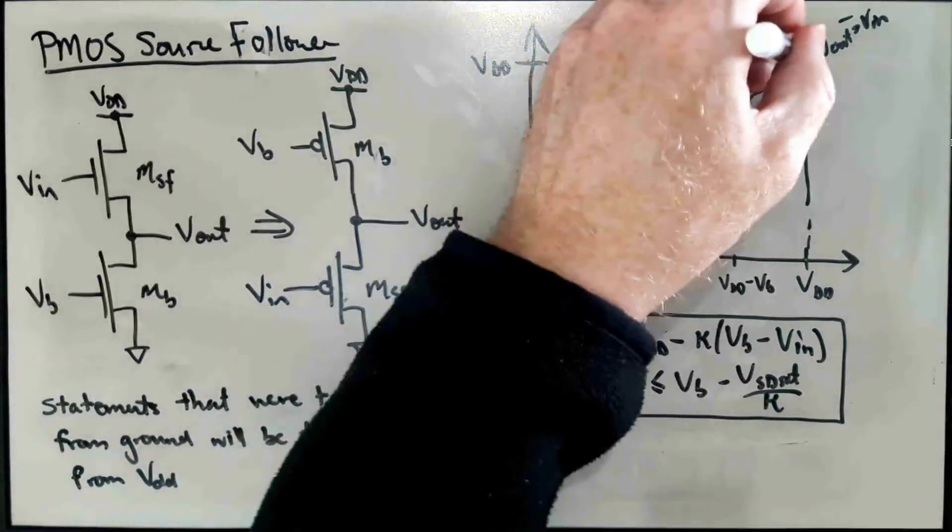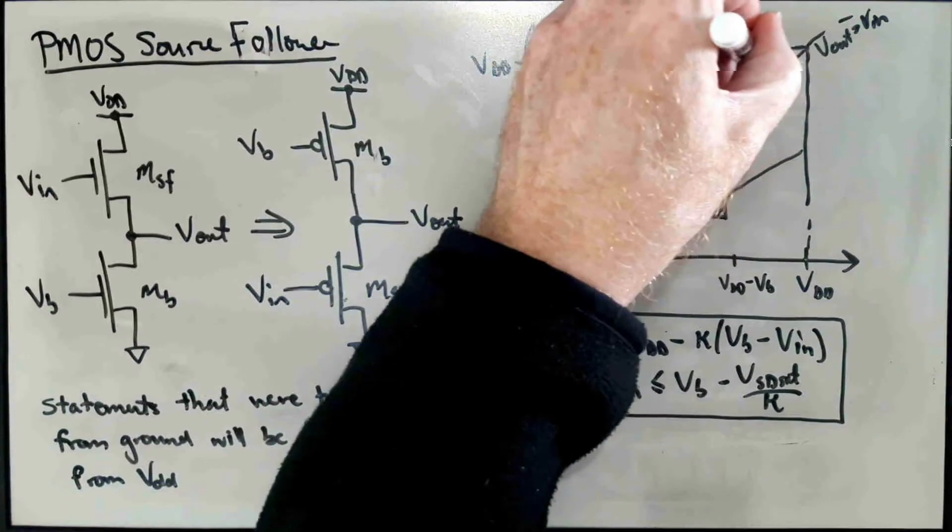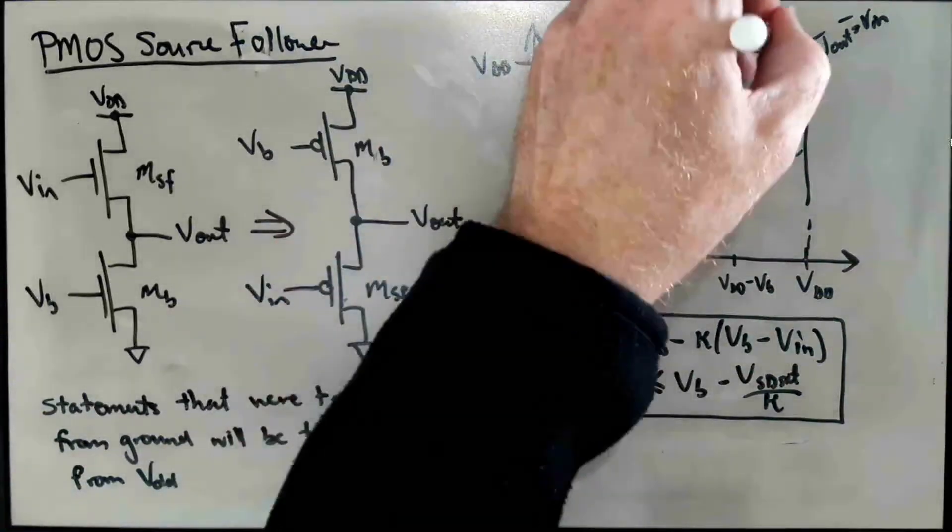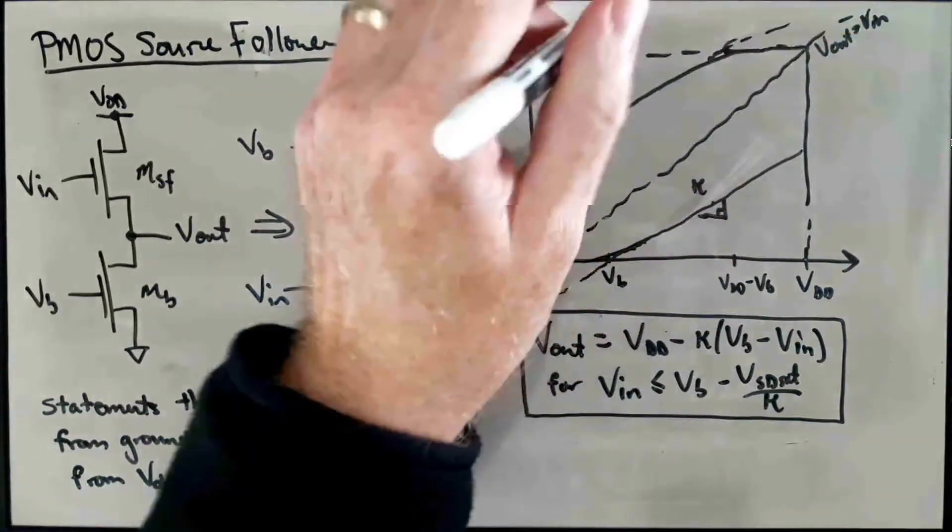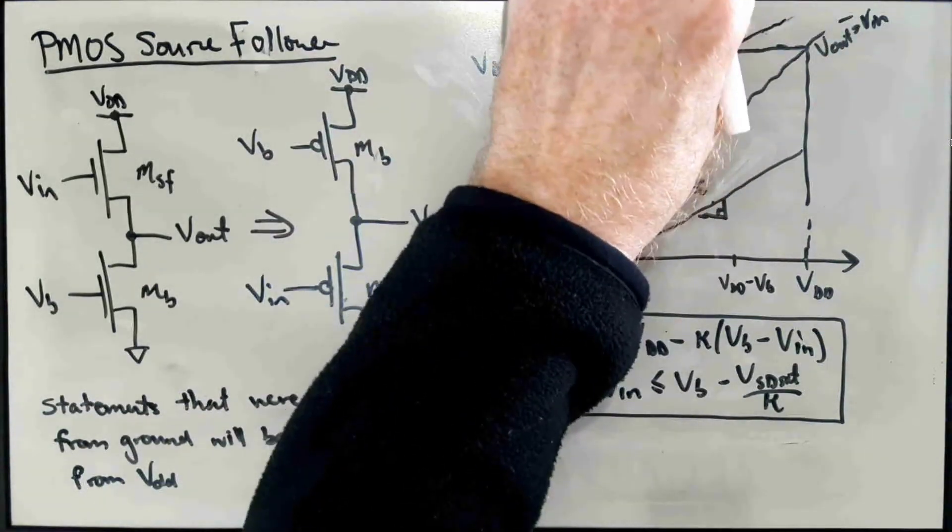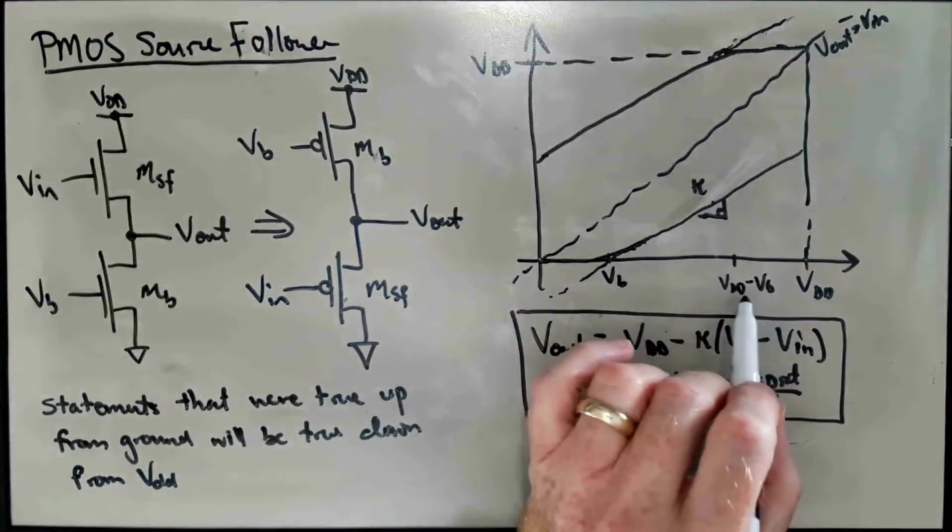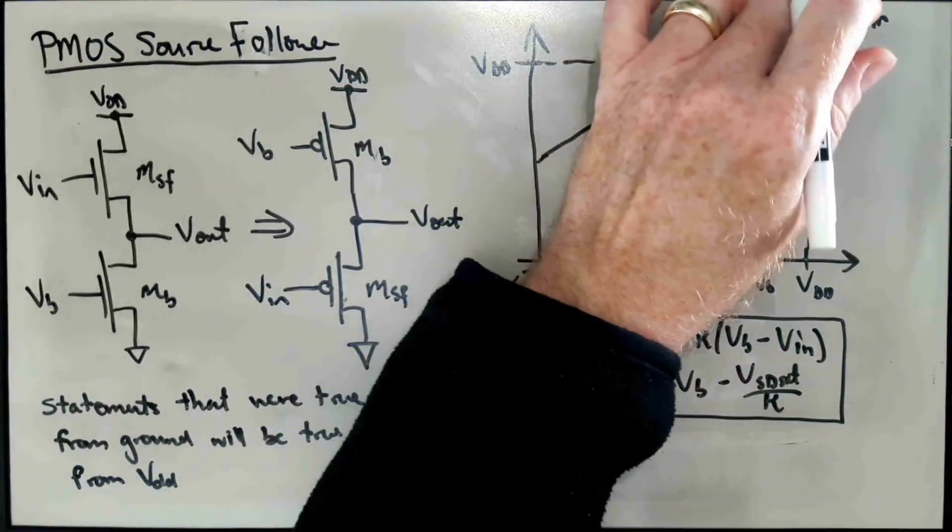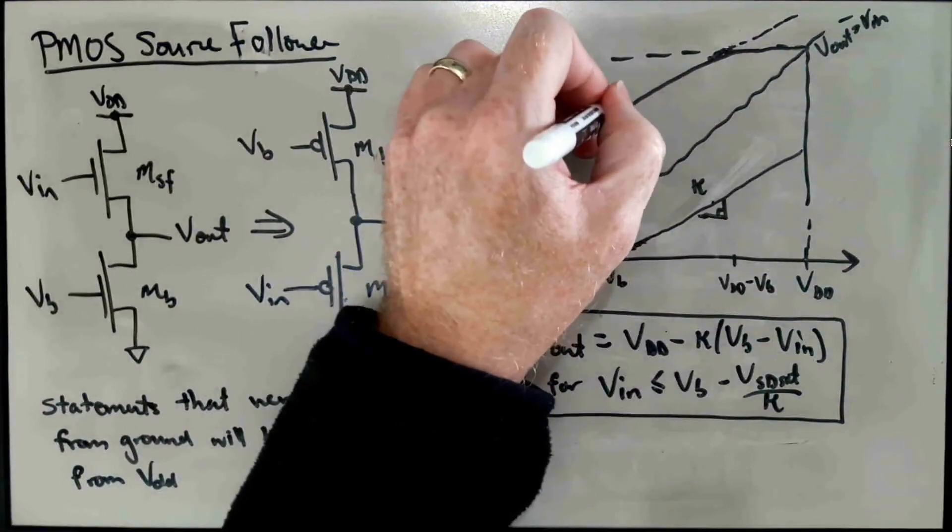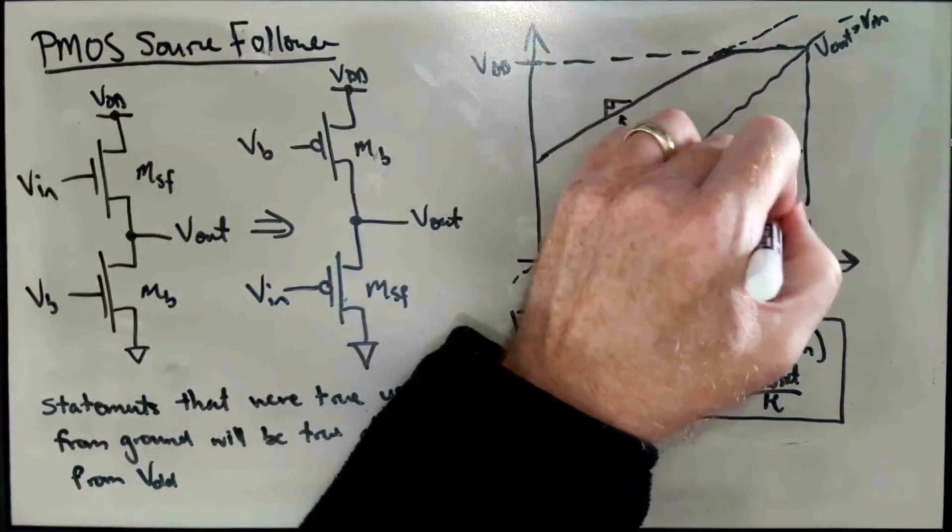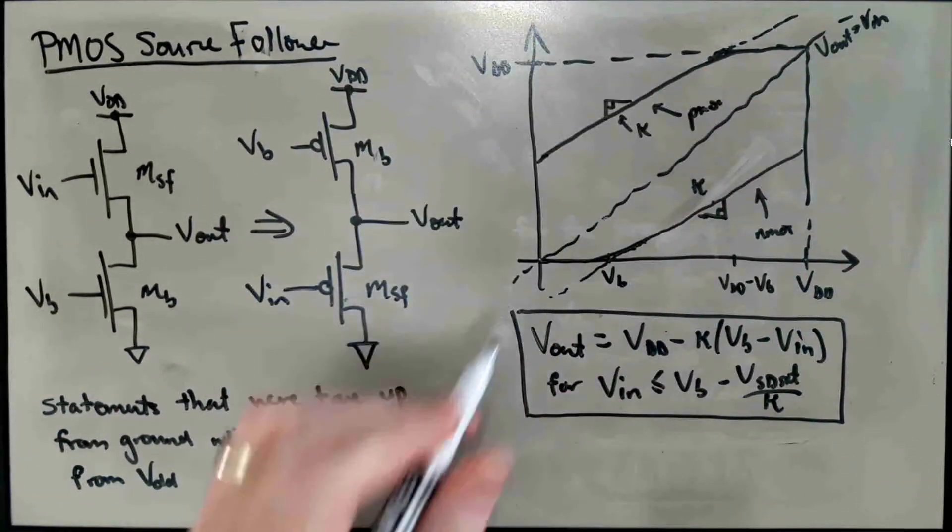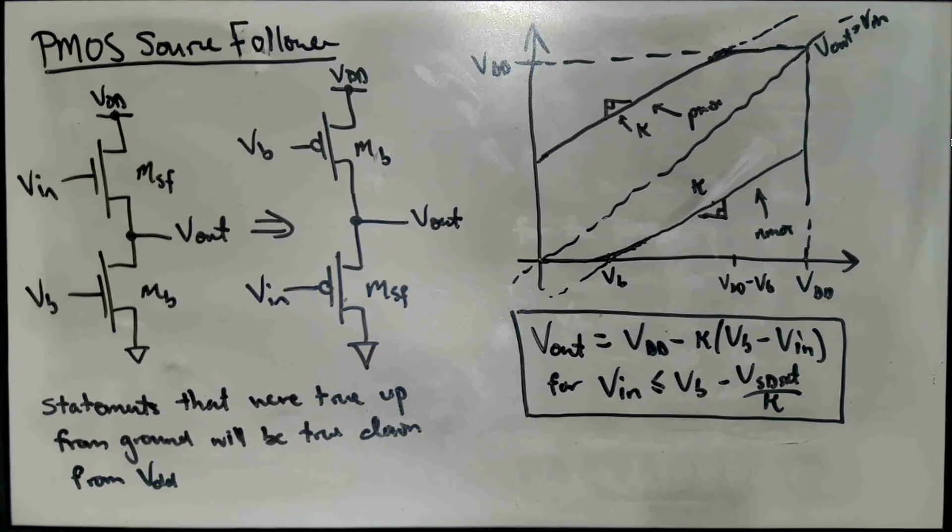And so that might be up here, and I can draw this. It would be something like that. And so the intercept of the extrapolated model would go through the VDD line up here at VB minus Kappa, or rather, I'm sorry, VDD minus VB. And the slope here would be Kappa. So this is the NMOS, and this would be the PMOS.